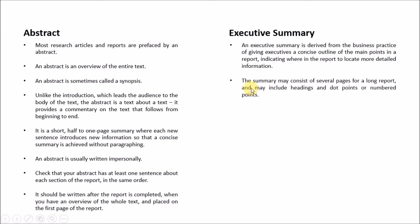The executive summary may consist of several pages. Compare that to an abstract, which is half a page or not even a full page. The executive summary of a long report may include headings and dot points or numbered points. In an abstract, there is only one paragraph — no breakdown, nothing — just one paragraph.